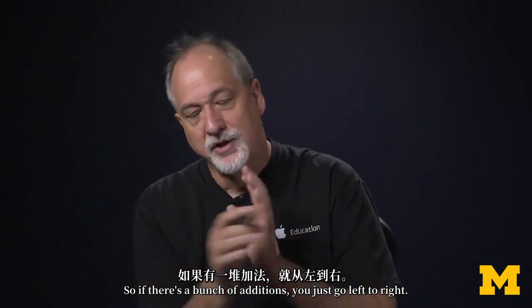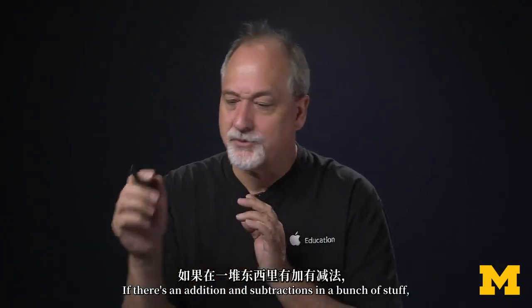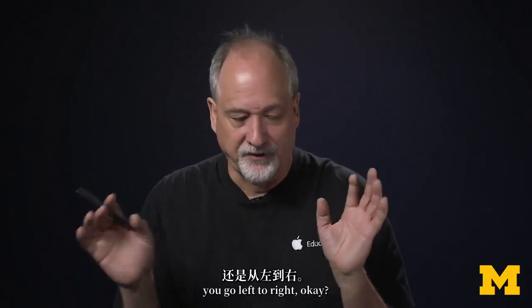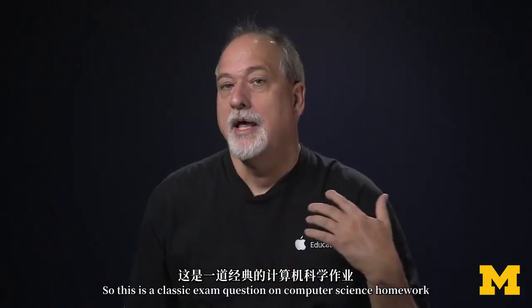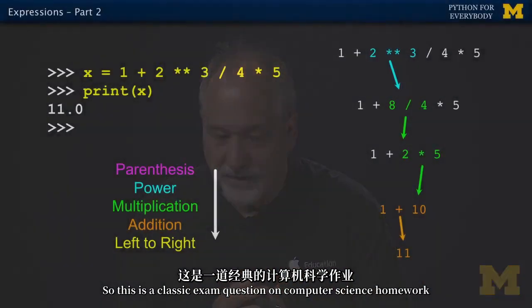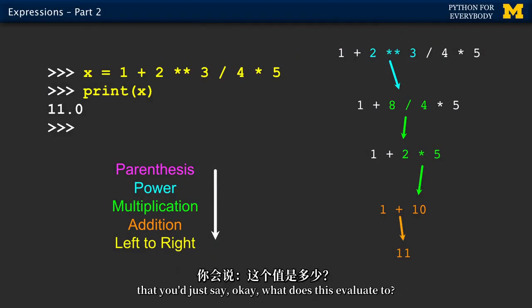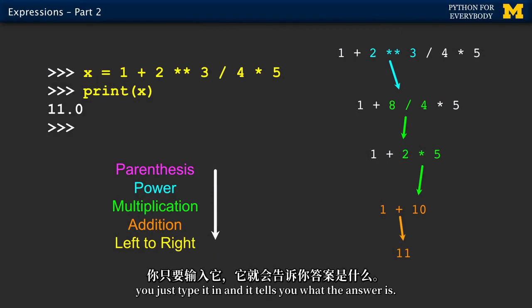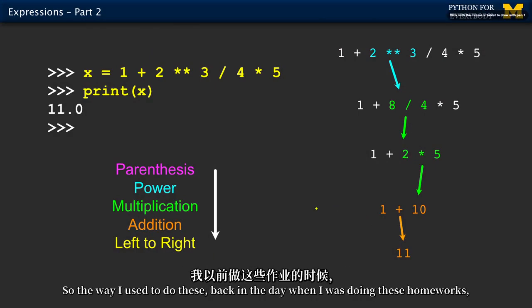So within, if there's a bunch of additions, you just go left to right. Or if there's an addition and subtractions and a bunch of stuff, you go left to right. So this is a classic exam question on computer science homework that you just say, what does this evaluate to? Now, of course, if you have Python, you just type it in and it tells you what the answer is.